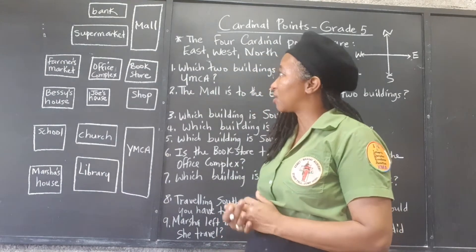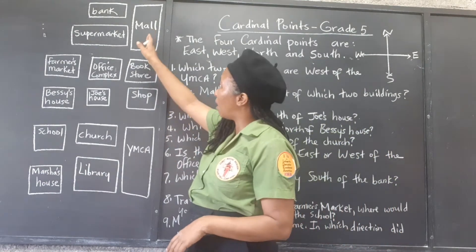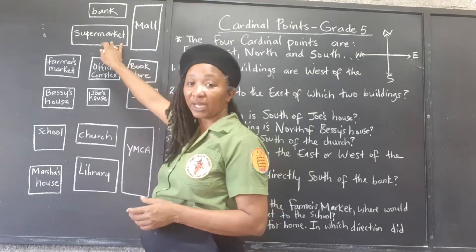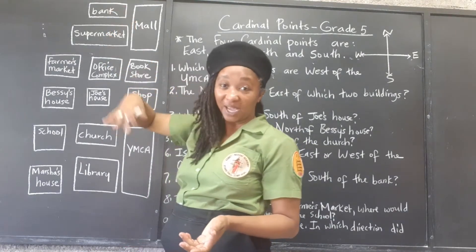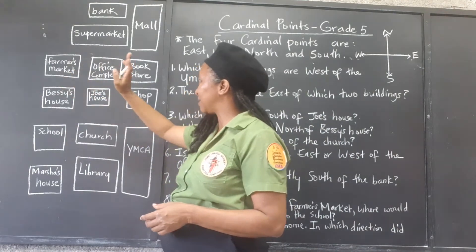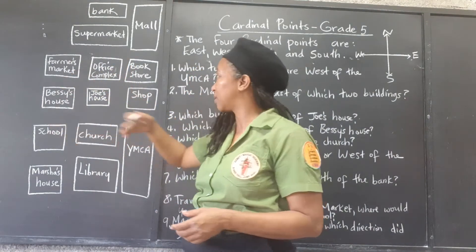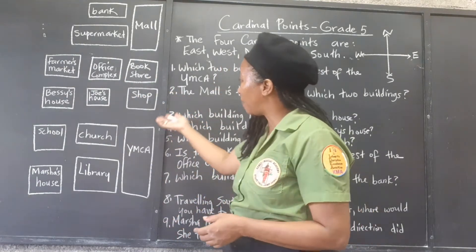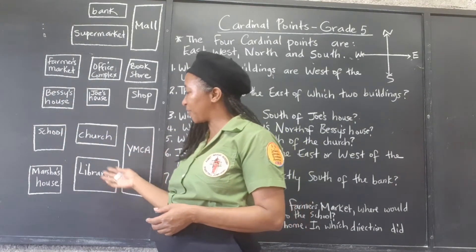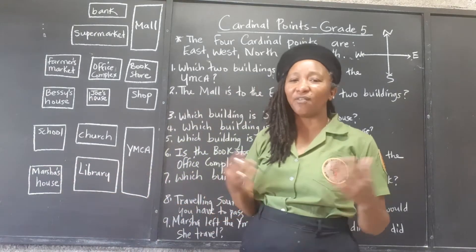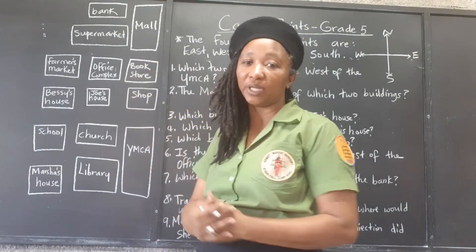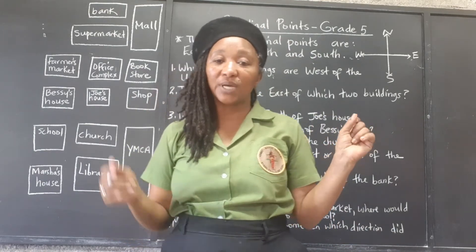We're going to look at this little community and answer the questions. We have the mall, the shopping mall, the supermarket, the bank, the farmers' market, the office complex, the bookstore, shops, Joe's house, Bessie's house, the school, the church, the YMCA, the library, and Marshall's house. We're focusing on this little section of the community, and we're going to use our cardinal points to answer the questions.